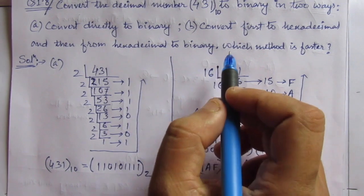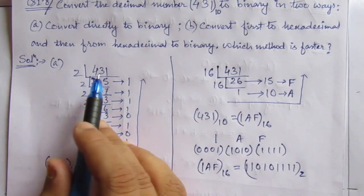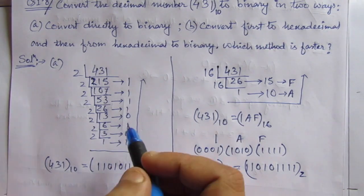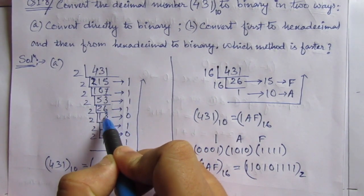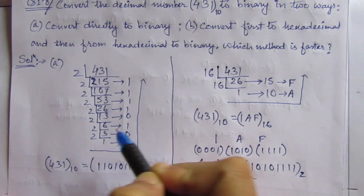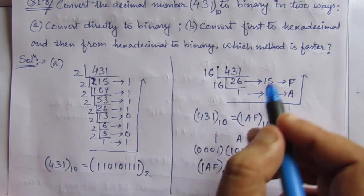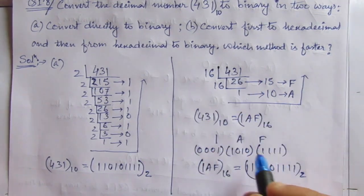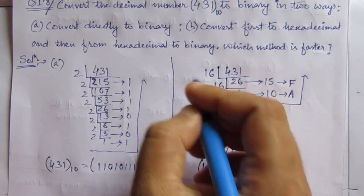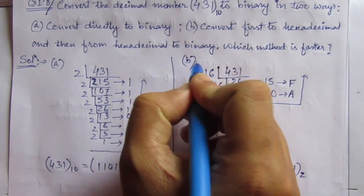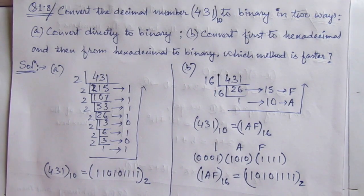Now we have to find the third part, which method is faster. In the first method we have how many divisions? 1, 2, 3, 4, 5, 6, 7, 8 divisions. Here we have to do 2 divisions. So this method will give you a faster output. To convert using method B we will get the solution faster.